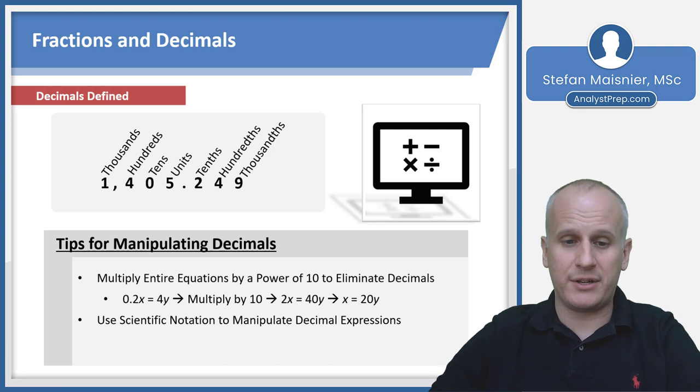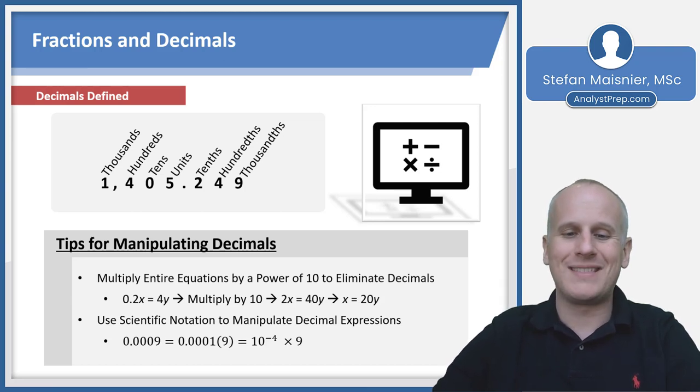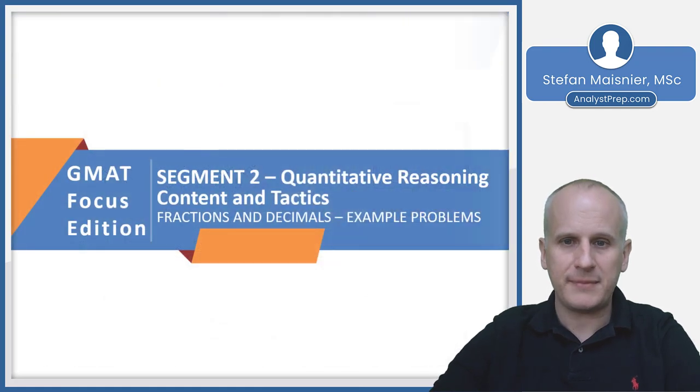You can also use scientific notation or ten to some power to manipulate decimal expressions. 0.0009 can be rewritten as 0.0001 times 9. 0.0001 as an exponent is 10 to the negative 4, so rewrite this as 10 to the negative 4 times 9. This may be a faster way to work through decimal conversions and cancellations.